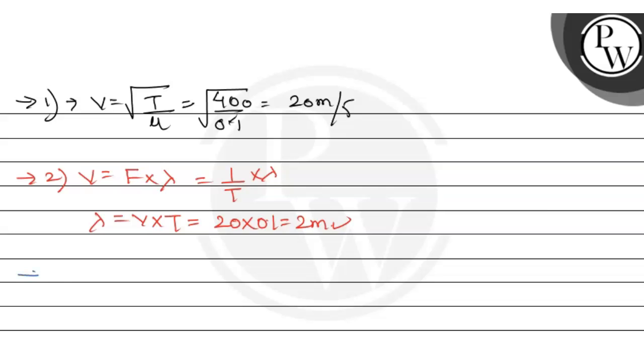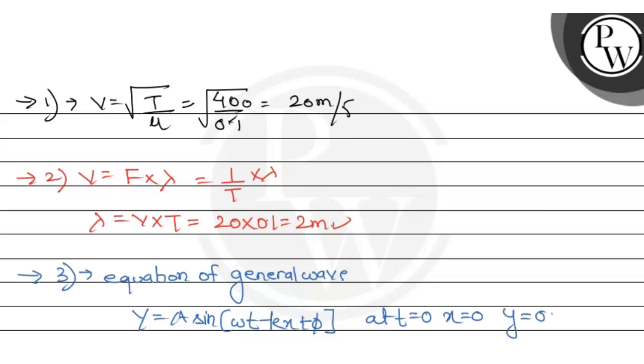Now let's solve the third part. For solving the third part, I have told you the equation of general wave. 0.01 equals 0.02 sin omega into 0 minus k into 0 plus phi. So here, 1 by 2 equals sin phi. So phi value is pi by 6.